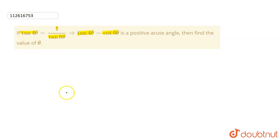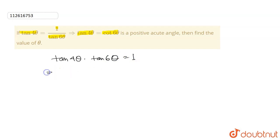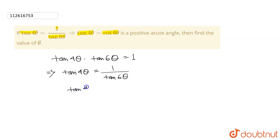So we can see tan 4θ into tan 6θ equals to 1, or we can write tan 4θ equals to 1 by tan 6θ, or tan 4θ equals to cot 6θ.